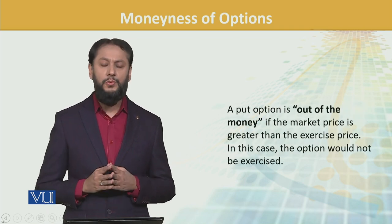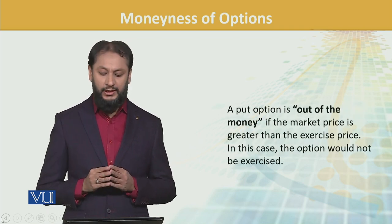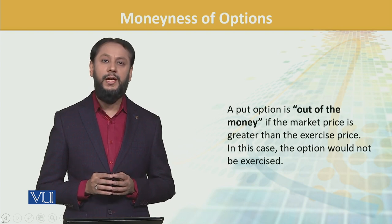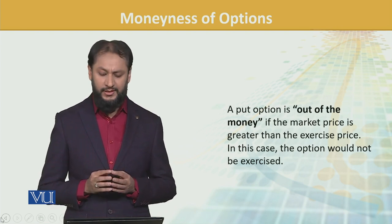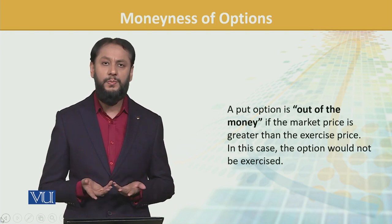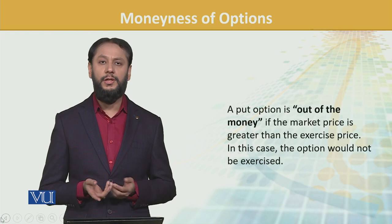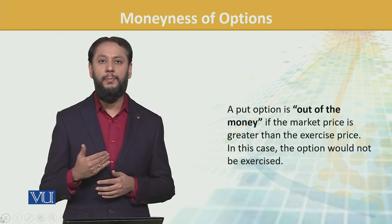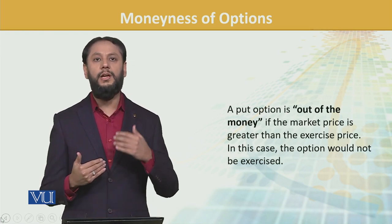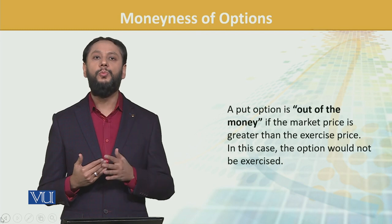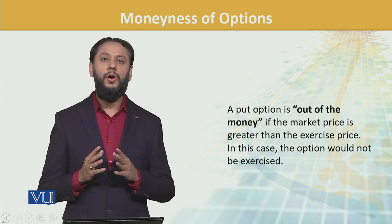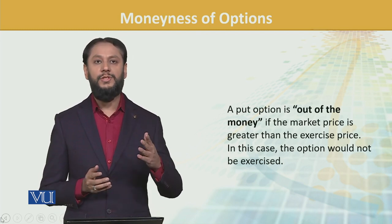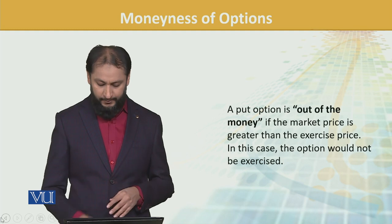A put option is out of the money if the market price is greater than the exercise price. In this case the option would not be exercised, because there is no logic — the market price is better for you. You can sell at a higher price in the market. So people will leave the option un-exercised and sell it in the market.